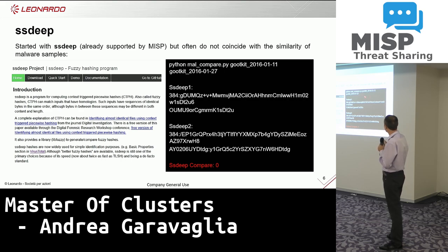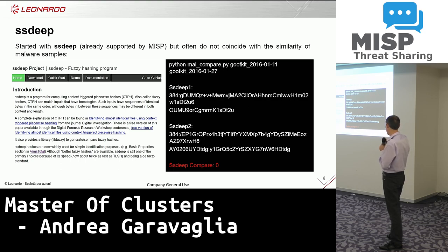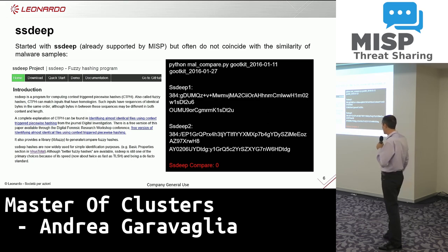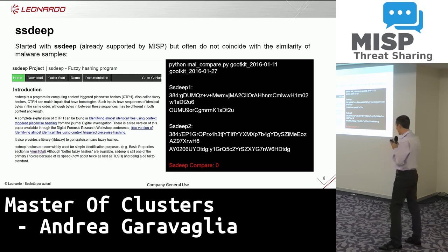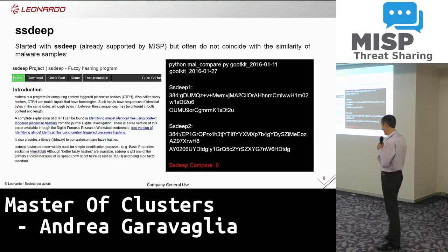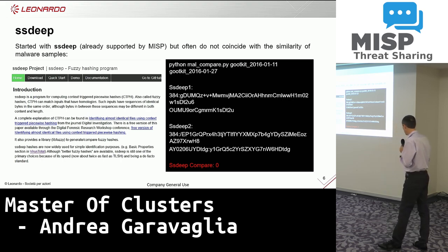In this case, we see two rootkit samples compiled within two weeks of difference, so the attacker changed something in the code. You can see the two SSDEEP values and the compare is zero. The threshold in MISP for the compare is 40 by default, but with zero we do not match.